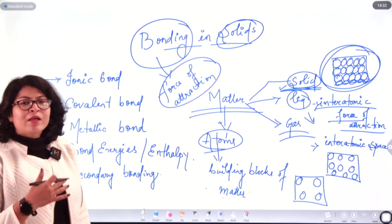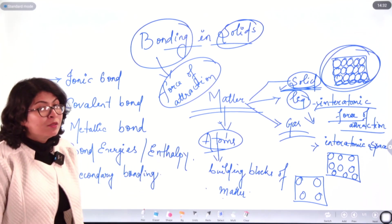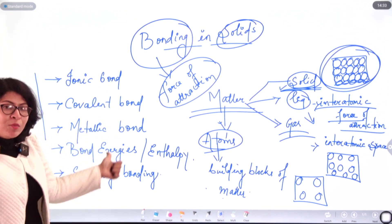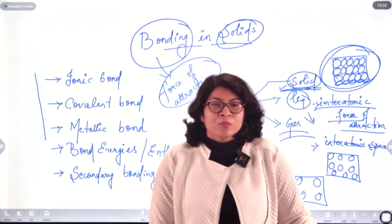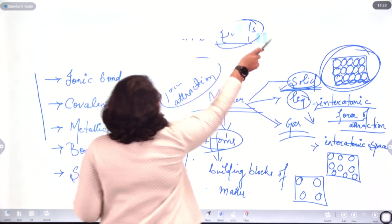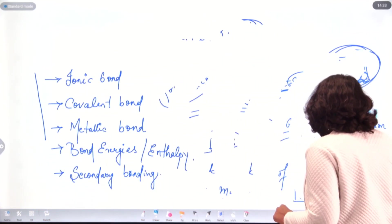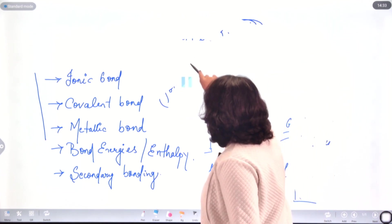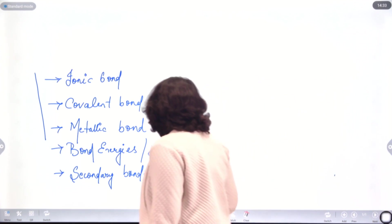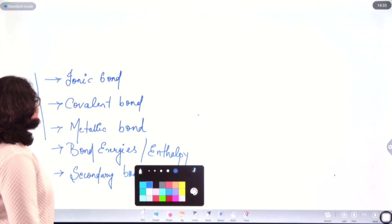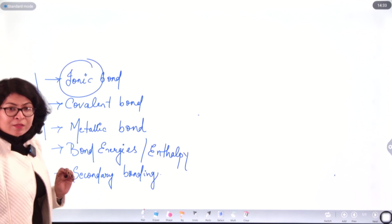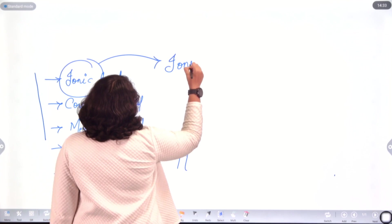Now you understand why the chapter is named Bonding in Solids. In case of solids the atoms are very closely packed, so the interatomic space between them is very less, and the chances of bonding between the atoms is very high. The kinds of bonds you have in your syllabus are: ionic bond, covalent bond, and metallic bond — the same ones you have studied before. Ionic bond, from the name itself, is closely related to the formation of ions.